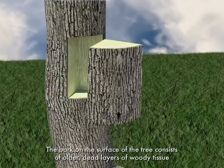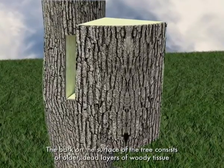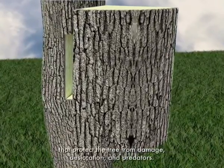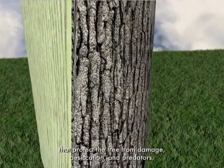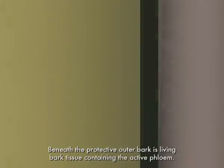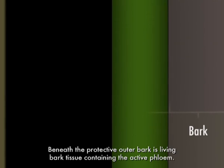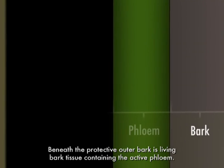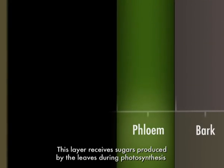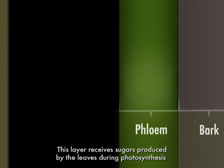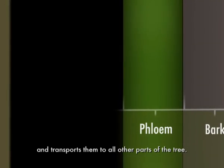The bark on the surface of the tree consists of older, dead layers of woody tissue that protect the tree from damage, desiccation, and predators. Beneath the protective outer bark is living bark tissue containing the active phloem. This layer receives sugars produced by the leaves during photosynthesis and transports them to all other parts of the tree.